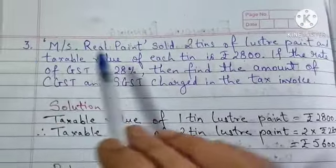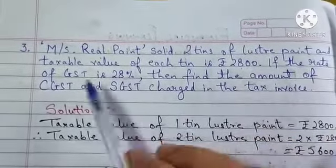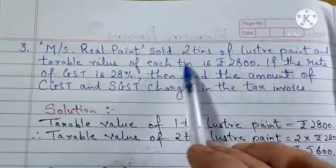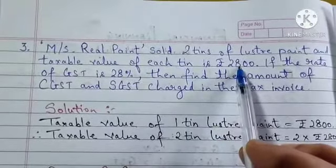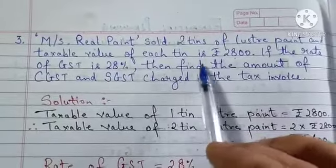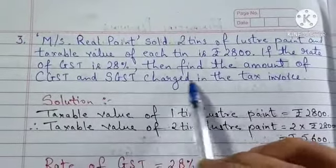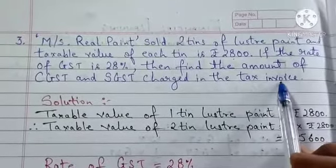Third Sum: MS Real Paint sold 2 tins of Luster Paint at taxable value of each tin is Rs. 2800. If the rate of GST is 28%, then find the amount of CGST and SGST charged in the tax invoice.